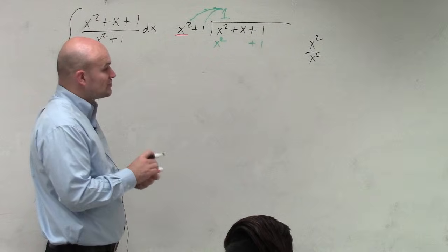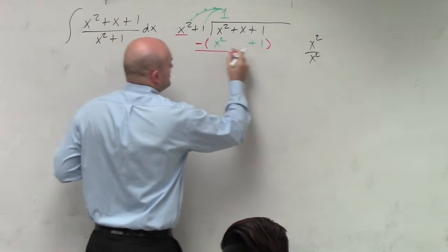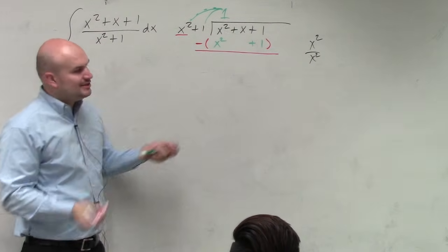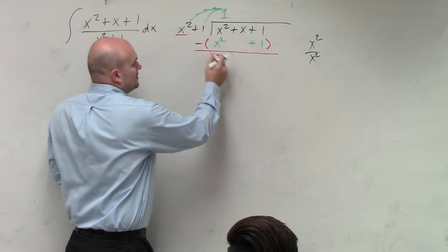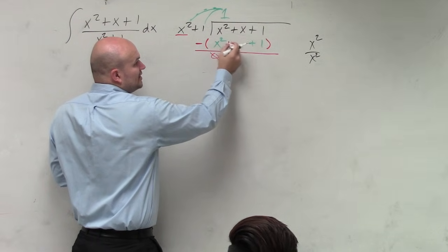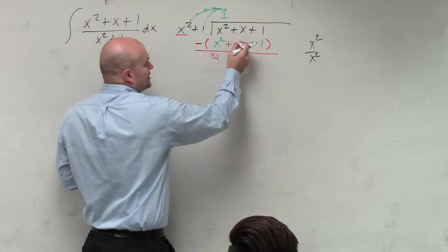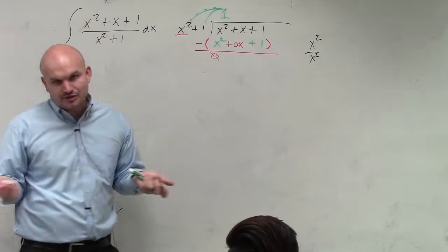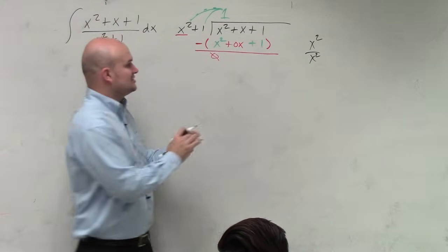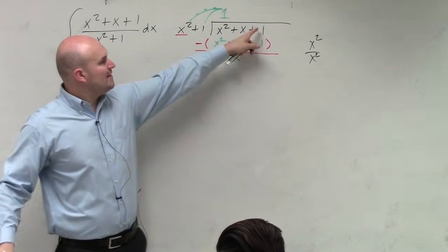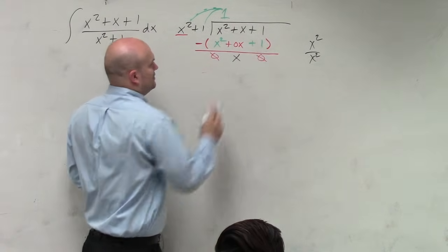Then I'm subtracting each one of these. So the way that I like to do it is just say subtraction, and then just put them in parentheses. You don't really need to. I mean, you could just say x squared minus x squared we know is obviously 0. You could put a filler here and say this is going to be 0x because 0 times x is 0. But what is x minus 0x? That's just going to be x. And then 1 minus 1 is obviously 0.